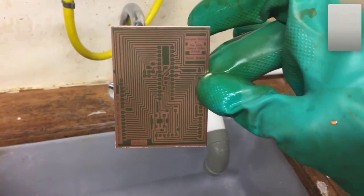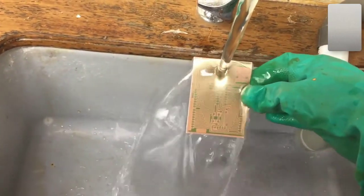Once it's fully developed, we should now clearly be able to see our circuit board in the photoresist. We're just going to rinse it off under the tap to get rid of any developer solution left.